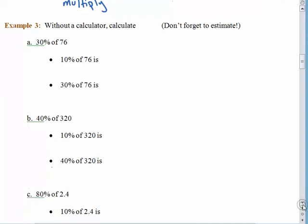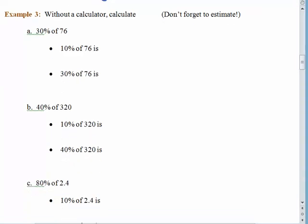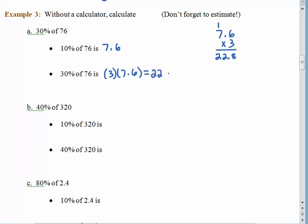We don't have a calculator, so we'll work this out by hand. We would like 30% of 76. In terms of estimating, half of 76 is about 38, so 30% of 76 should be somewhere in the 20-something range. 10% of 76 is 7.6 — just move the decimal one space to the left. If we want 30% of 76, we take 3 and multiply by 7.6: 3 times 6 is 18, carry the 1, 3 times 7 is 21, plus 1 is 22 — so 30% of 76 is 22.8.